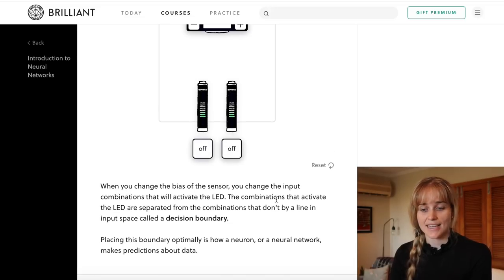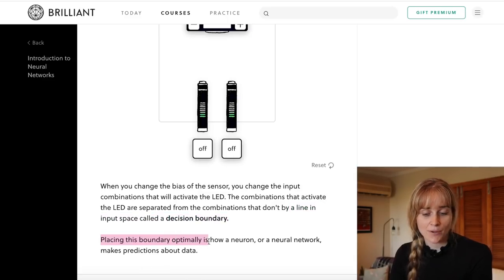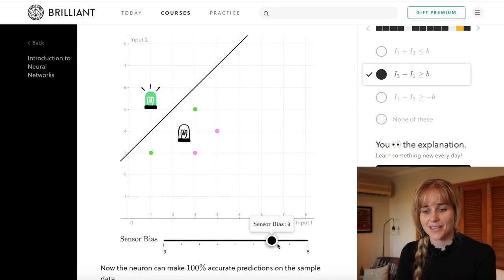On the next page it tells us that this line in the input space is called a decision boundary, and placing this boundary optimally is how a neuron or a neural network makes predictions about data. It is also possible to have a decision boundary with a negative slope.